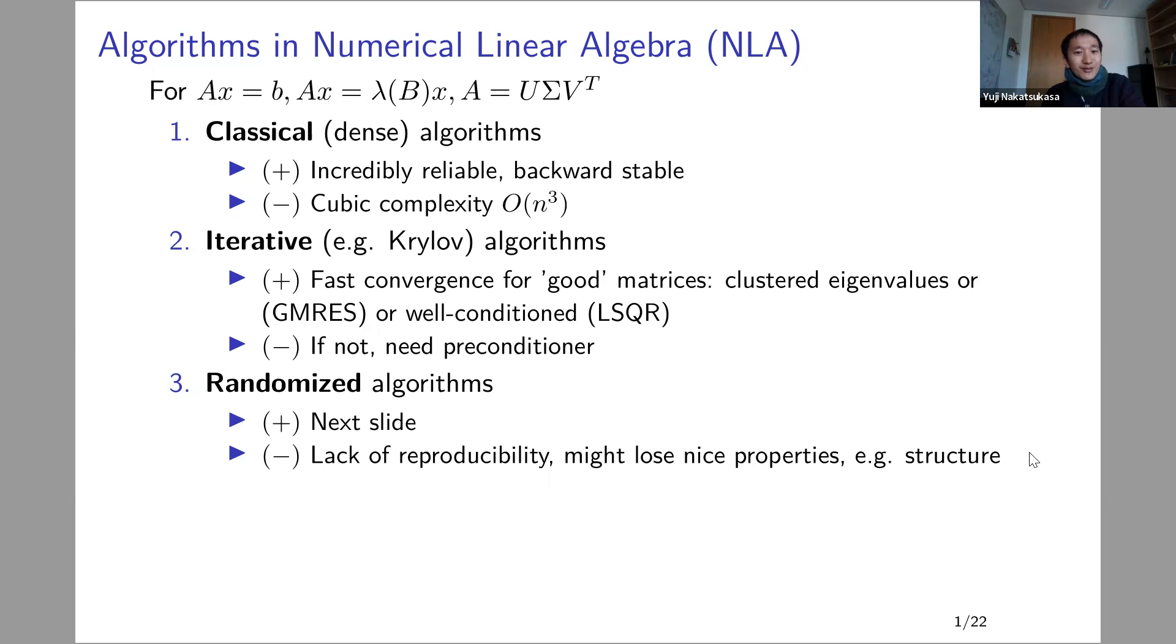In my viewpoint, algorithms in numerical linear algebra solve two types of problems: linear systems or eigenvalue problems. There are three types of methods that people have proposed. The first is classical methods or classical algorithms, where we target a matrix without assuming any structure, a dense matrix. We're prepared to use n cubed operations for an n by n problem. If the matrix is in the thousands or smaller, these methods are incredible, incredibly reliable, guaranteed to be backward stable.